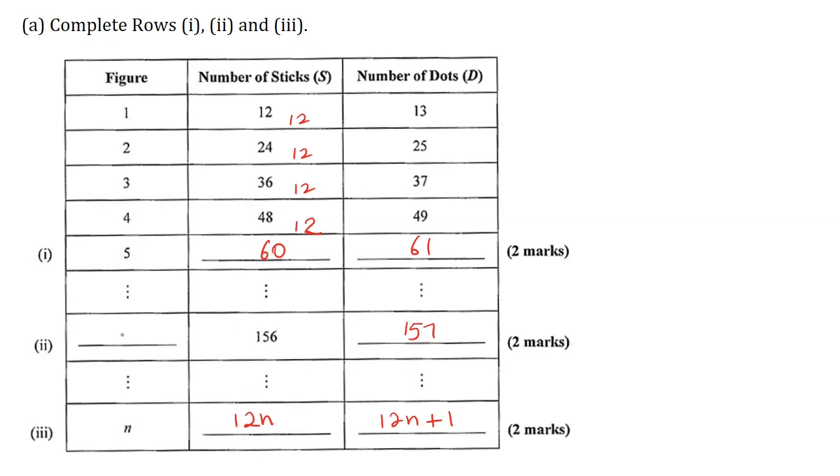Now I need to determine the figure number that has the number of sticks being equal to 156. So I will write here 12n is equal to 156 divided by 12. n is equal to 13. So I will write in 13 here.